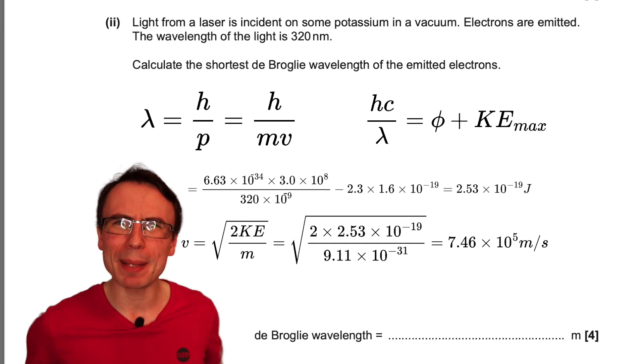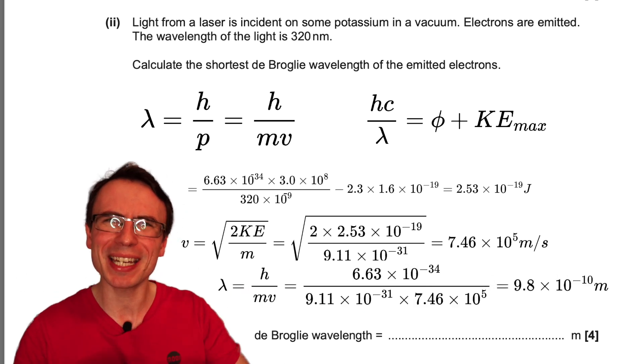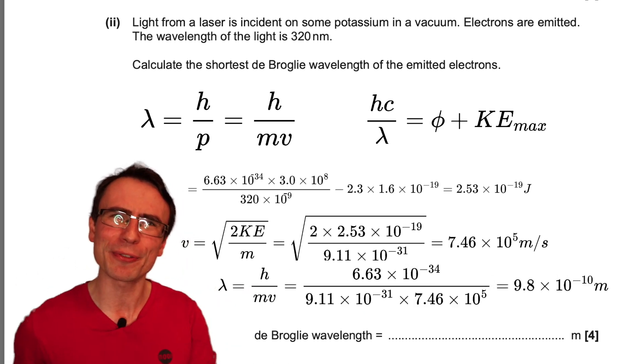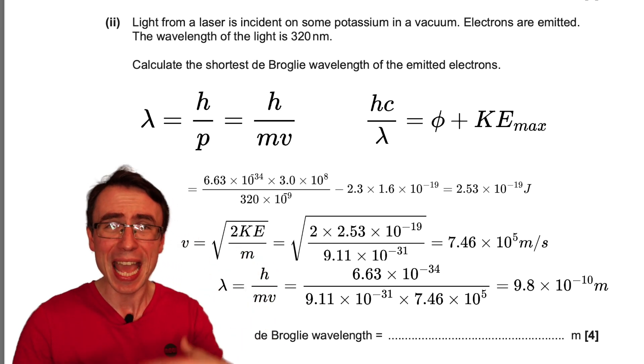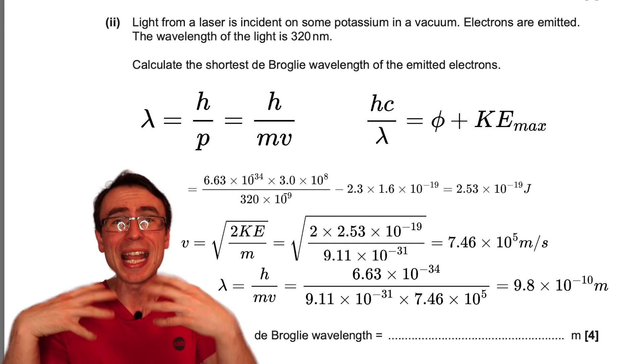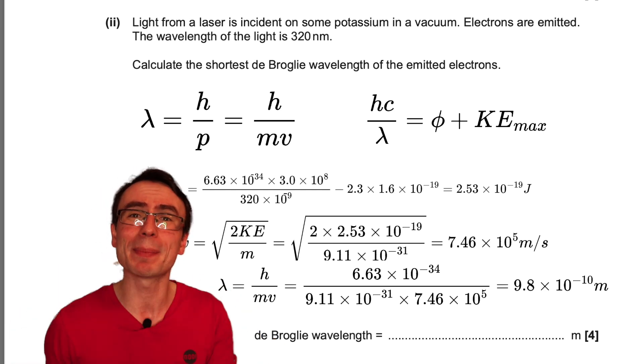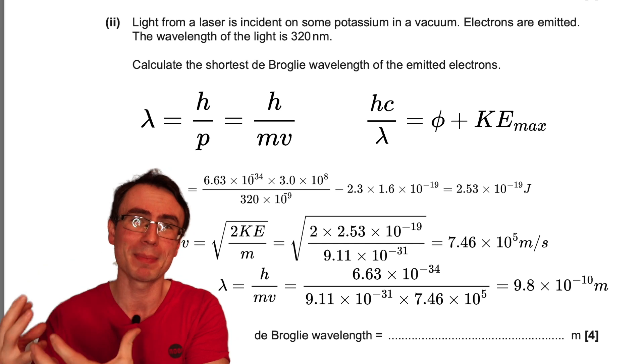We're absolutely not done yet because our final step determining the wavelength is going to be substituting those values into lambda is equal to h divided by mv. And if we do that we're going to get around 9.8 times 10 to the power of minus 10 meters.